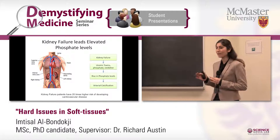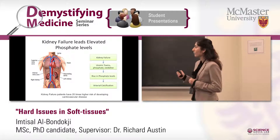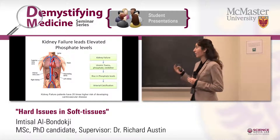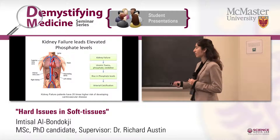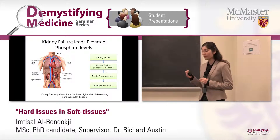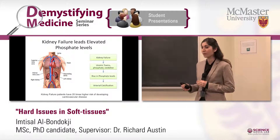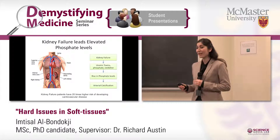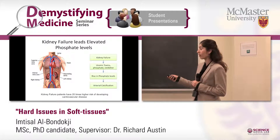The heart and kidney form an axis of circulation. What happens with kidney failure is that uremic toxins and other ions accumulate, and this gives rise to arterial calcification. Kidney failure patients have a 20 times higher risk of developing cardiovascular disease, and about 50% of them actually die due to cardiac failure.